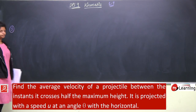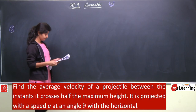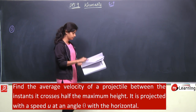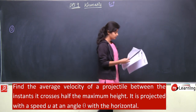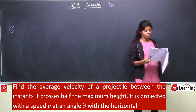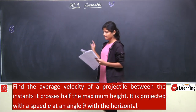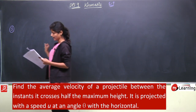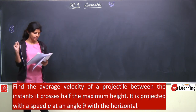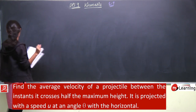Question number 3: Find the average velocity of a projectile between the instants it crosses half the maximum height. It is projected with a speed u at an angle theta with the horizontal.